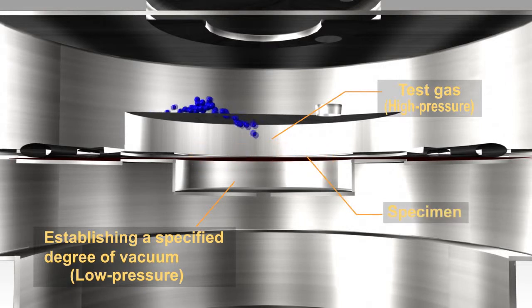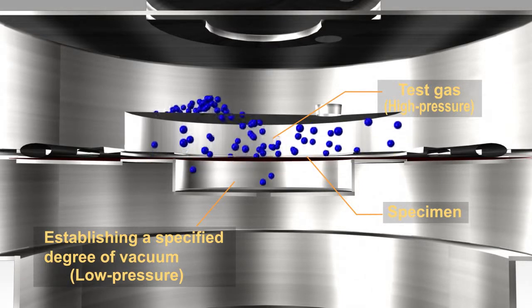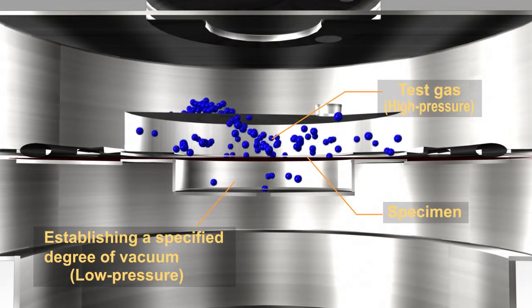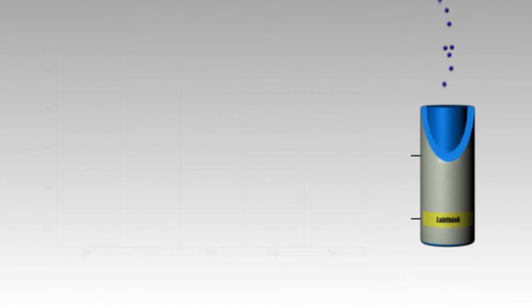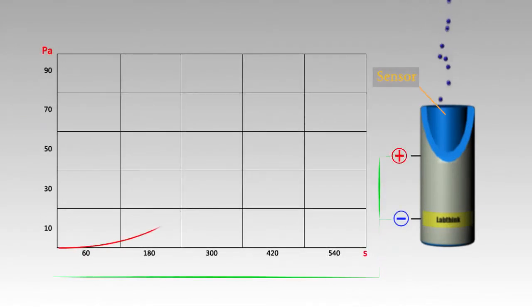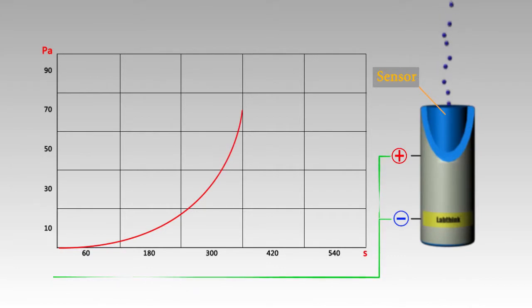The test gas then permeates from the high pressure cell to the low pressure cell under the gradient of differential pressure. Finally, the computer calculates the barrier properties of the test specimen by measuring the pressure change in the low pressure cell.